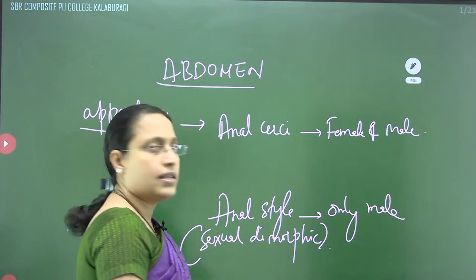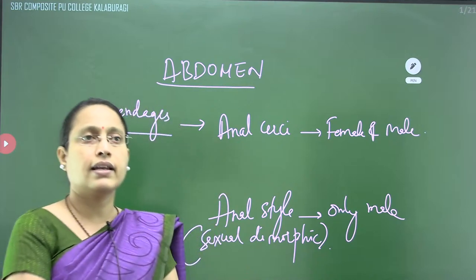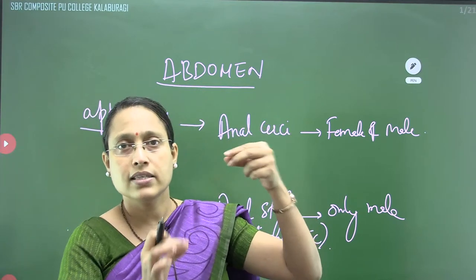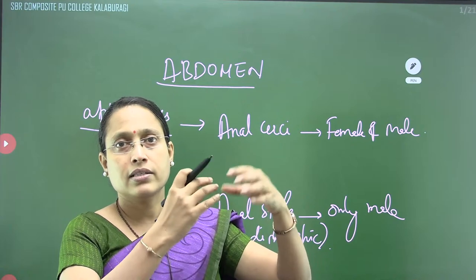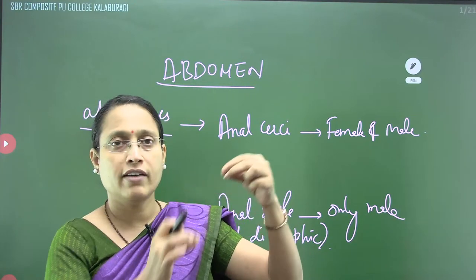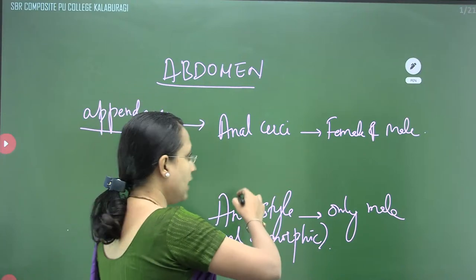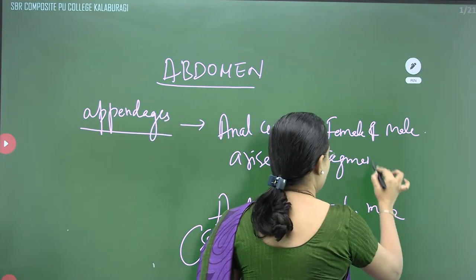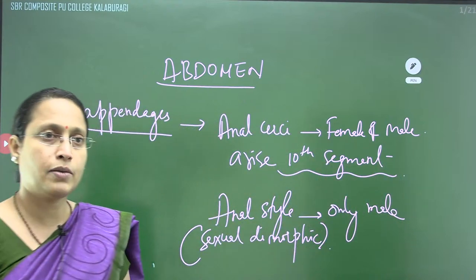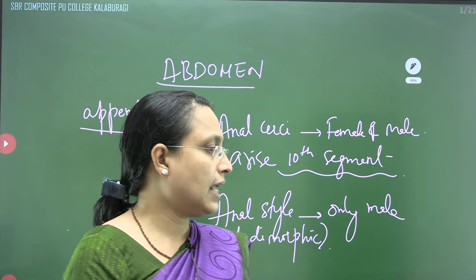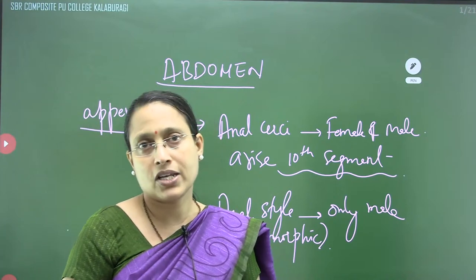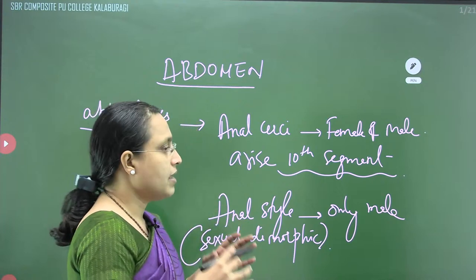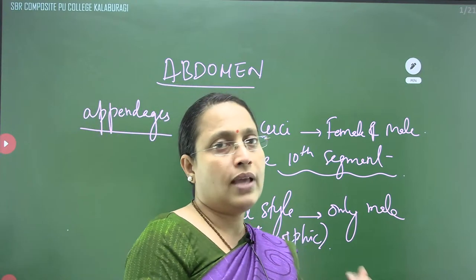The anal cerci are jointed structures — many segments combine to form an anal cercus. The anal cerci typically arise from the 10th segment of the body and are present in both male and female. The role of anal cerci is to receive sound vibrations and perform other sensory functions — if there is any vibration, the cockroach can detect it through the anal cerci.